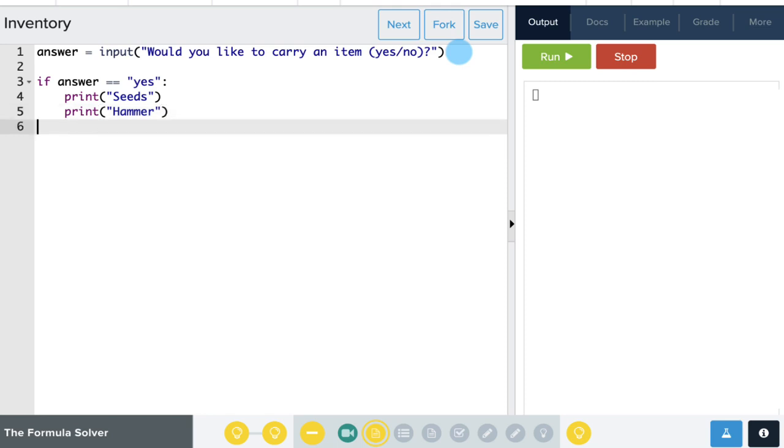If the user says no, or otherwise, we can just say that's okay, and not show a menu. So let's print, that's okay.